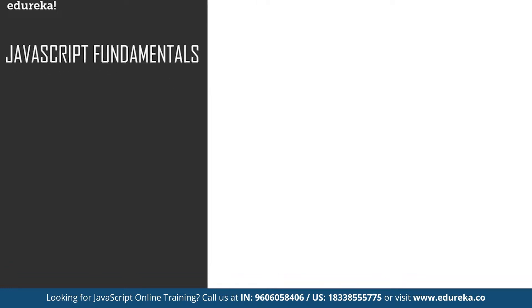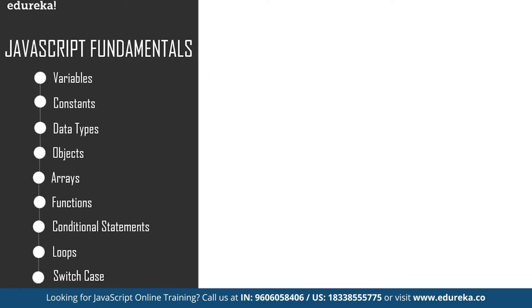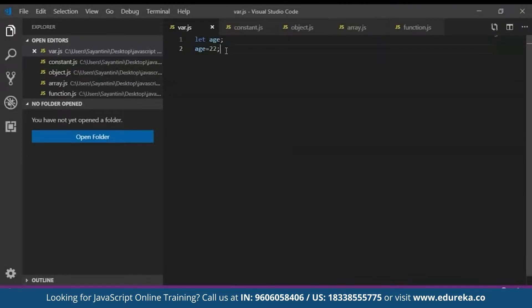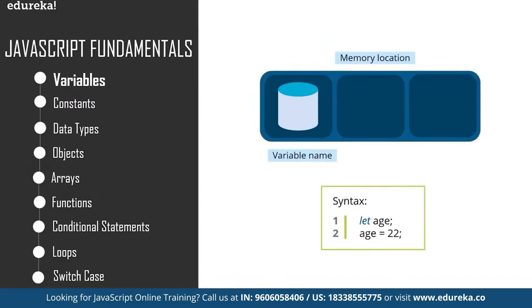Now let's cover some of the basic fundamentals of JavaScript. These include variables, constants, data types, objects, arrays, functions, conditional statements, loops, and switch case. A variable is a name given to a memory location, which acts as a container for storing data temporarily — reserved memory locations to store values. To declare a variable in JavaScript, we use the 'let' keyword. For example, you can write 'let h;' and then provide a particular value for that variable.